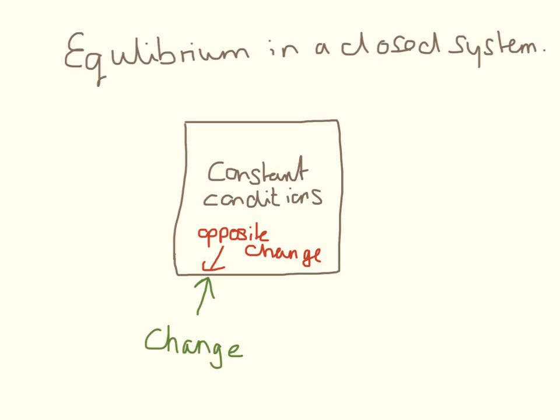So we need to understand about equilibrium, and I'm talking about equilibrium in a closed system. So I have my box here. This is my closed system. Now everything in the box wants to stay the same. It doesn't want to change.